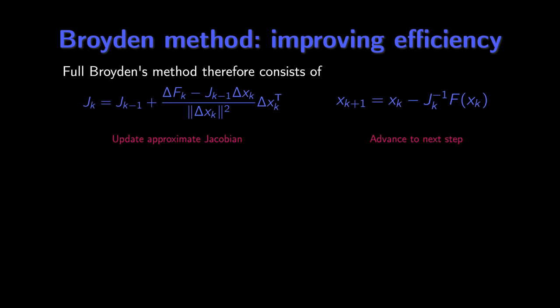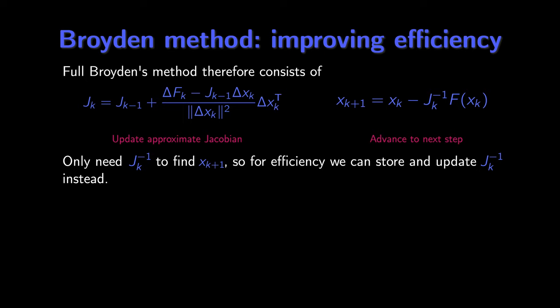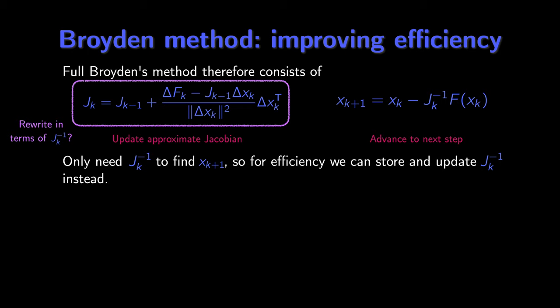The complete Broyden's method consists of two steps: we first update the approximate Jacobian computing J_k in terms of J_{k-1}, and we then advance the next step computing x_{k+1} using J_k. Looking at this method, we can see that we only require J_k inverse in order to find x_{k+1}. For efficiency, we could consider whether it's possible to just store and update J_k inverse directly instead, which would result in a substantial computational improvement because inverting J_k at every step is currently an expensive operation, particularly when the dimension becomes large. To do this we need to rewrite our update in terms of J_k inverse instead.